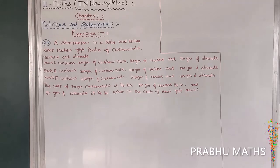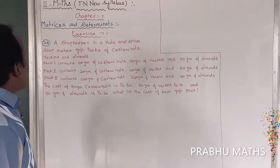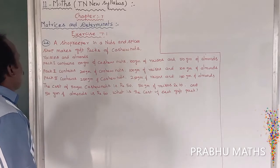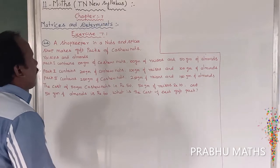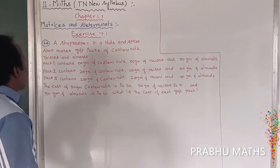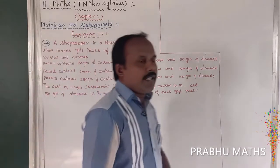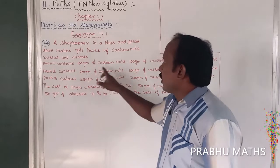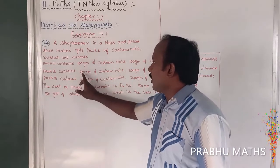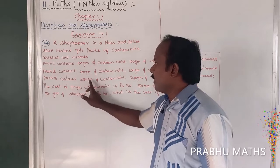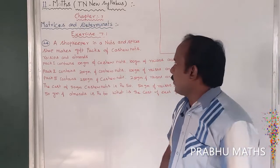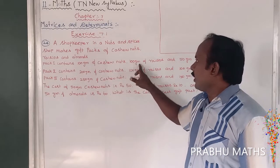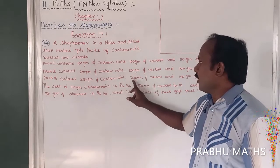A shopkeeper is making a gift pack of cashew nuts, rinds, and almonds. The first packet contains 100 grams of cashew nuts, the second packet 200 grams, and the third packet 250 grams. For rinds, the first packet has 100 grams, the second 150 grams, and the third 150 grams.